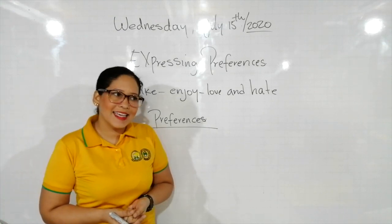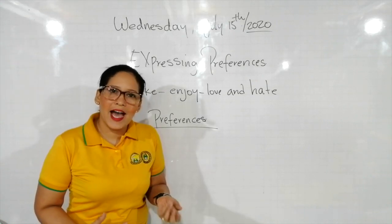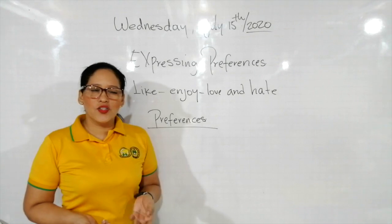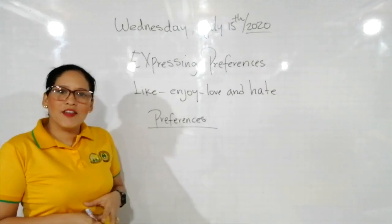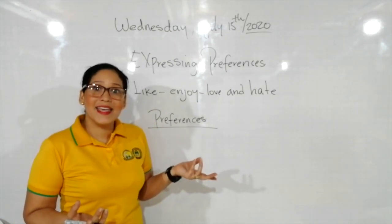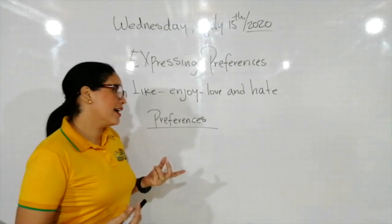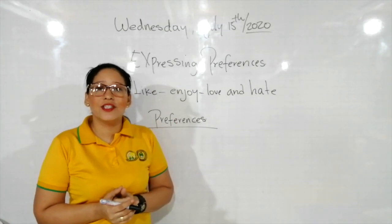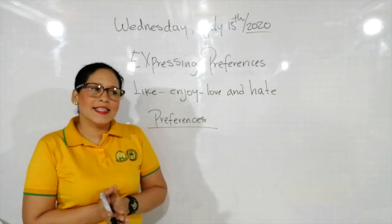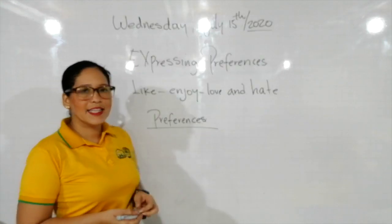Cuando vamos a usar like en positivo, yo digo I like. For example: I like hamburger, I like pizza, I like salad. Cuando algo no me gusta, si no le gusta a ella, yo puedo decir she doesn't like broccoli, o she doesn't like vegetables — a ella no le gustan los vegetales. Tenemos que tener claro lo que trabajamos en el presente simple: debemos saber con qué auxiliar va la negación según la persona.